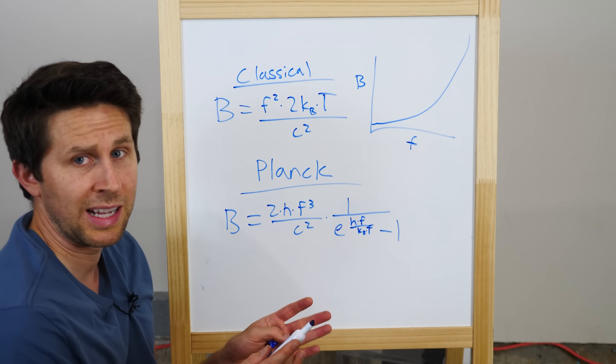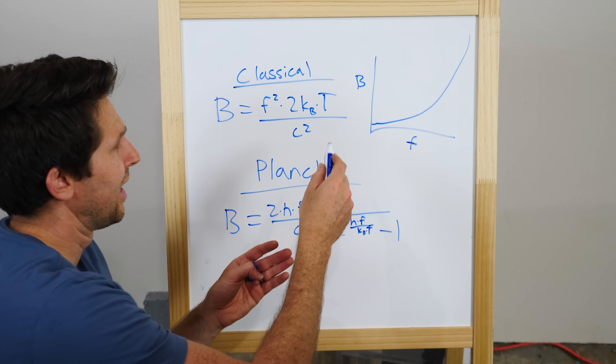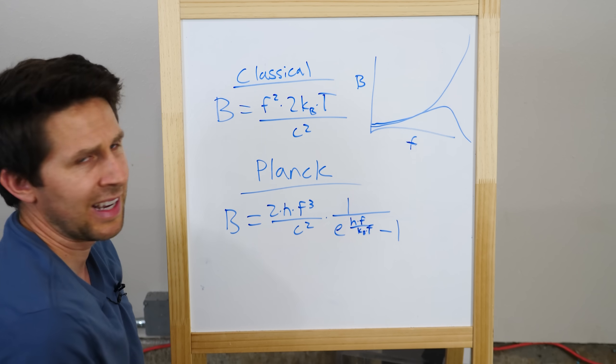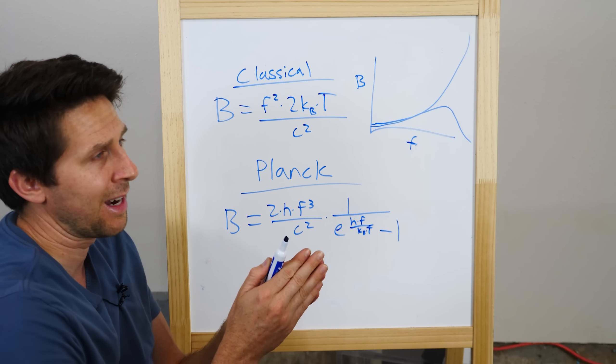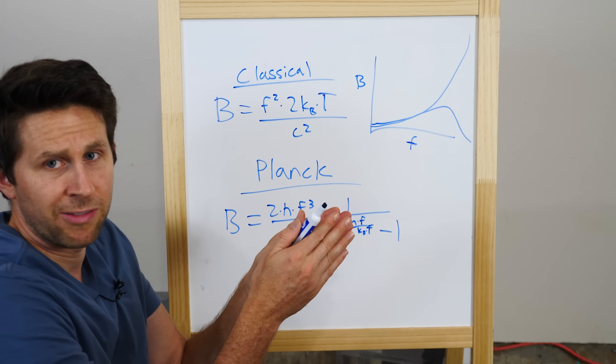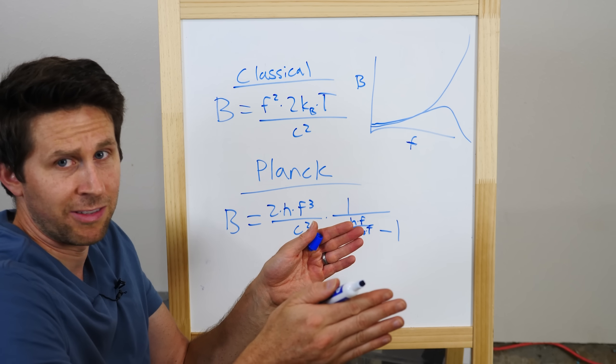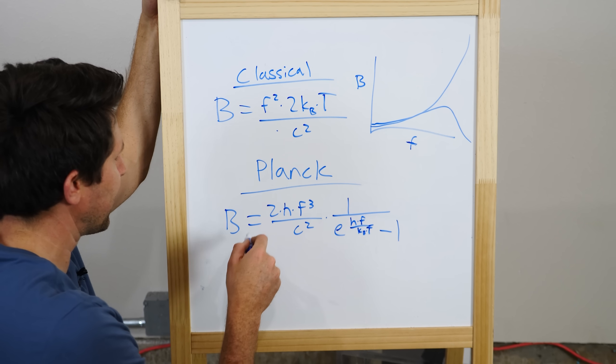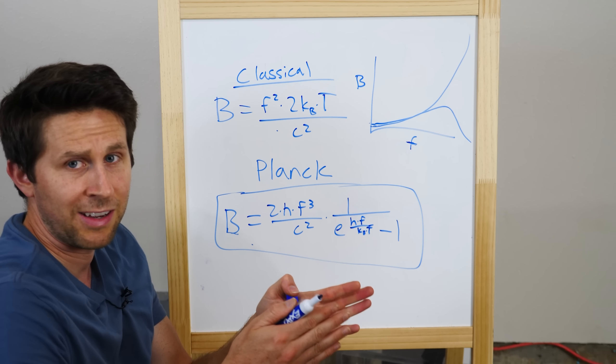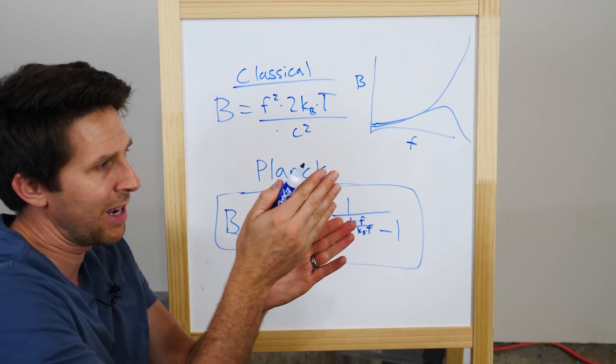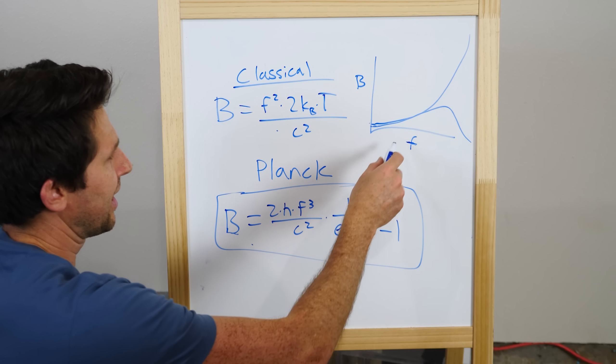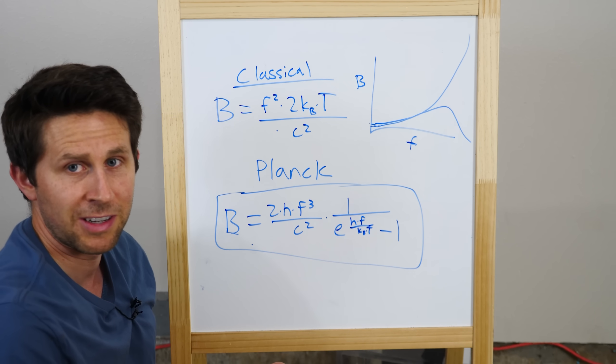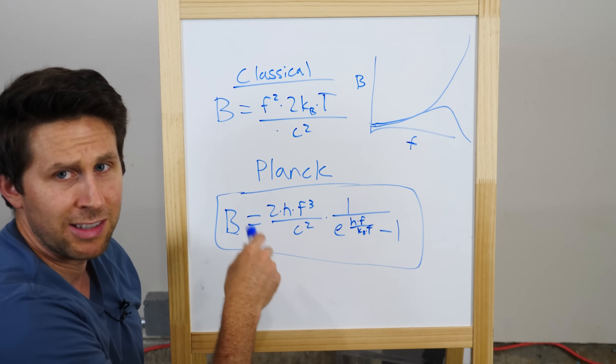But then a physicist named Planck came along. And out of the blue, just to get his math to fit the realistic equation that looked like this, he said, well, what if we just don't let the atom have any energy that we want? What if it only has these quantized levels of energy so it can only have these certain energies? If we do that, then this equation becomes this equation. And it turns out that if you only let the energy of the atom have certain values, then what you end up with is a plot that matches real life instead of this fake thing where it just goes off into infinity. And this is now known as Planck's law.